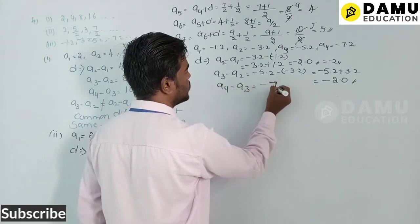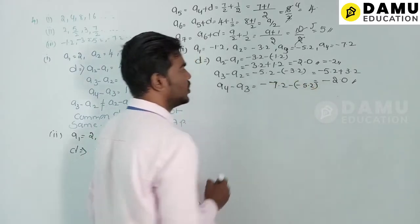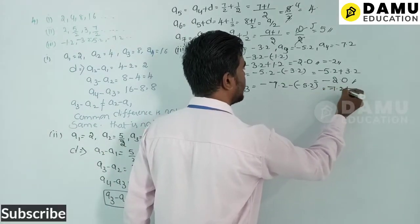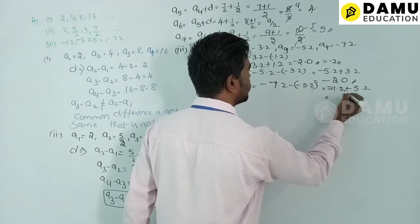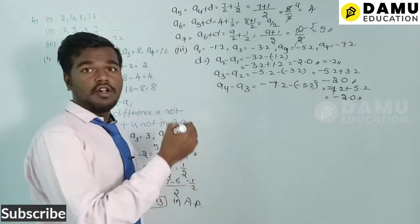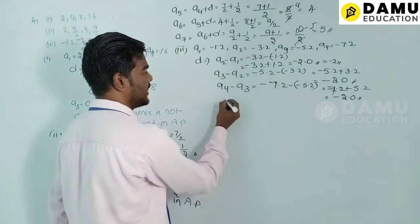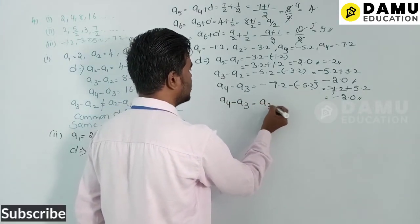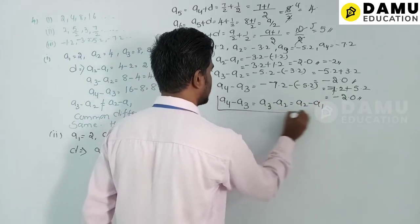And a4 − a3 = −7.2 − (−5.2) = −7.2 + 5.2 = −2.0. So a4 − a3 = a3 − a2 = a2 − a1. Common difference is the same.